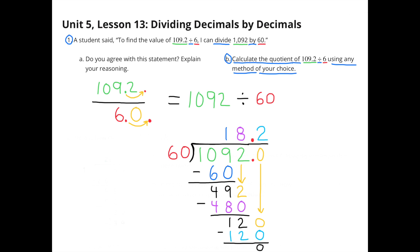1 times 60 is 60, and the difference is 49. Bring down the 2 in the ones column. How many times does 60 go into 492? It goes in 8 times. Above the 2 in the ones place, I put the 8. 8 times 60 is 480, and the difference is 12.